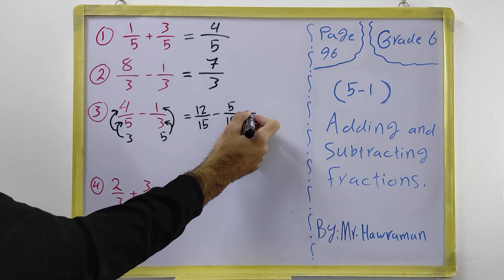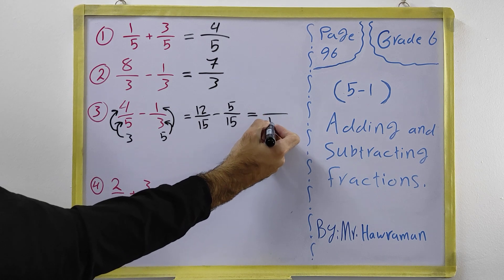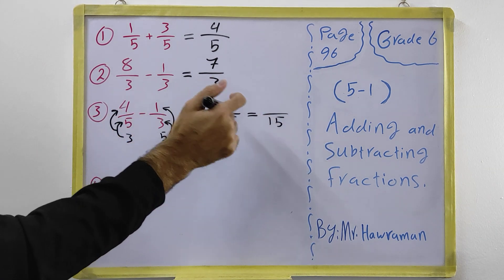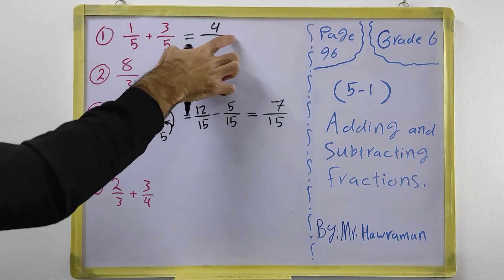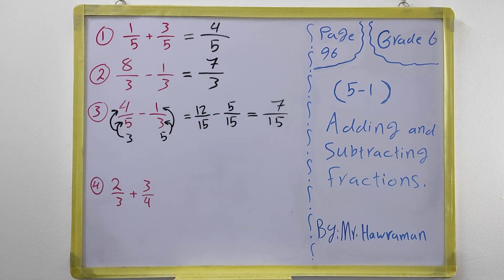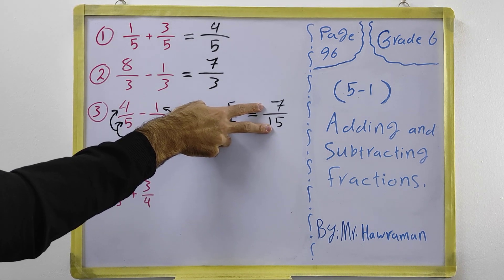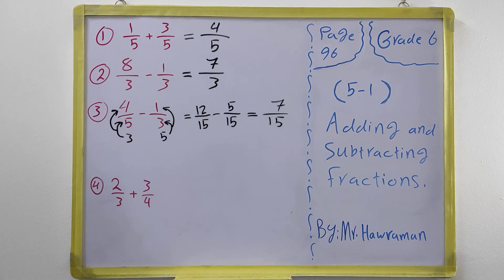Now that we have the same denominator, we subtract: 12 minus 5 equals 7, giving us 7/15. At the end, always check if you can simplify. Can 7 and 15 be divided by 2? No. By 3? No. By 5? No. So 7/15 is already the simplest form.